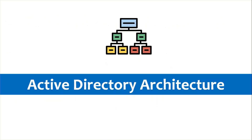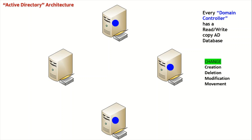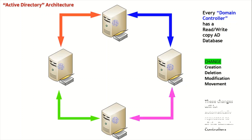Let us understand the active directory architecture before going to replication. In the world of active directory, every domain controller has a read-write copy of the active directory database. We can perform changes on any domain controller — a change can be creation, deletion, modification, or movement of objects. Since every domain controller has a read-write copy, changes made on any domain controller will be automatically replicated to all domain controllers.